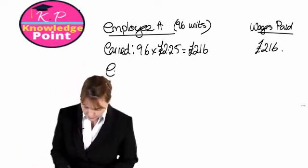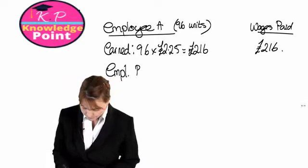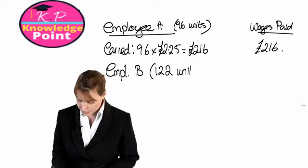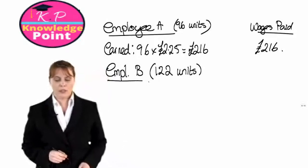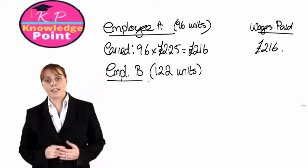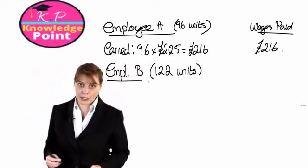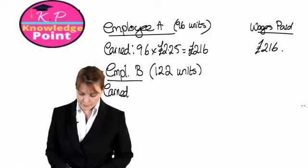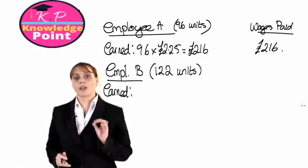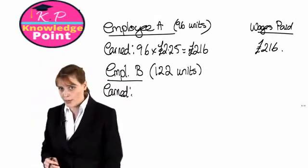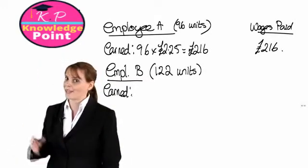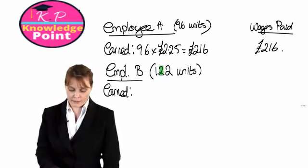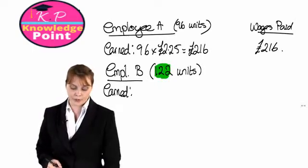Let's have a look at employee B. Employee B has produced 122 units. We'll think about how much have they earned, and is this higher or lower than the minimum wage? Remember, they get paid £2.25 for the first 100 units.